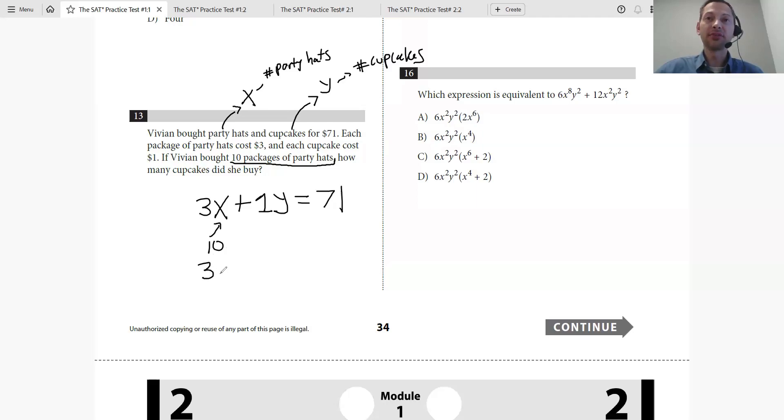Now I have 3 times 10 plus 1 times Y, which is just Y, equals 71. So 30 plus Y equals 71. Y equals 41. Y is the number of cupcakes, so the answer is 41.